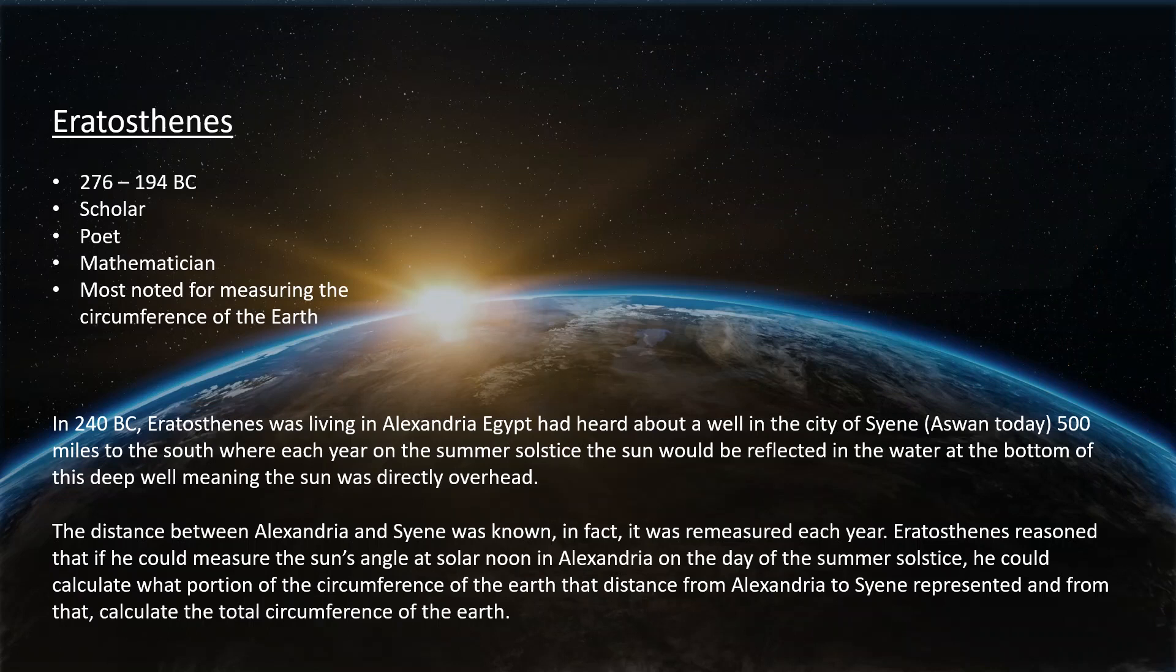Eratosthenes was living in Alexandria, Egypt, and he knew of about a well in a city about 500 miles south of him, where every year on the summer solstice, the sun would be reflected in the water at the bottom of that well, which meant that the sun had to be directly overhead. Eratosthenes knew how far it was from where he lived to the well because they measured that every year. I don't know why they measured it every year. It seems like it would have been easier just to write it down.